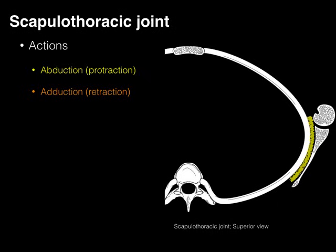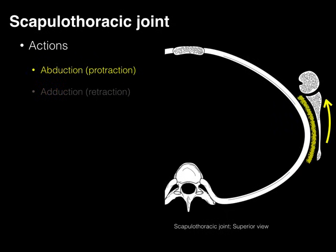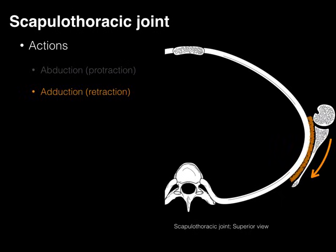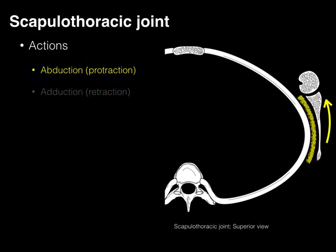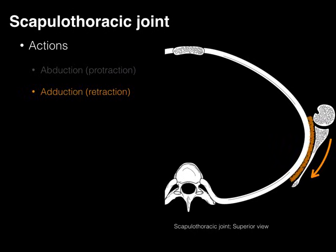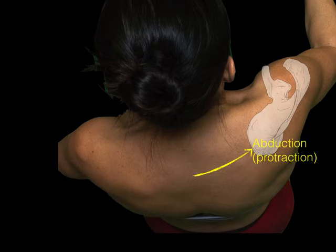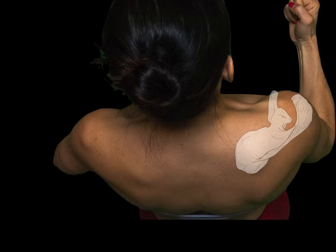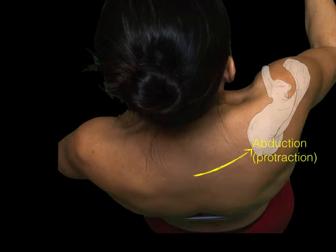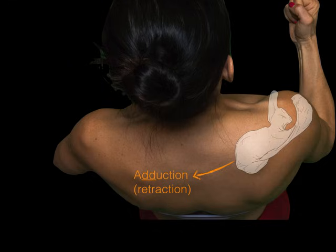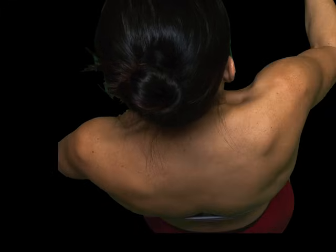What about protraction and retraction? In this superior view, observe that when the scapula abducts, because it's on the ribcage, it moves not only away from the midline but also forward — it protracts. When you adduct, the scapula moves backwards along the rib — it retracts. Protraction is forward and away from the midline; retraction is towards the midline and moving backwards. For example, going to punch someone protracts the scapula along the ribcage; pulling your hand back retracts the scapula.